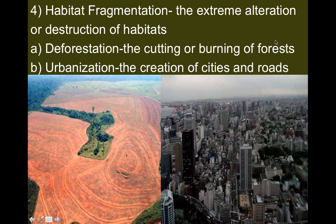Then we get to habitat fragmentation, which deals with deforestation. This is the extreme alteration or destruction of habitats. We've talked about both of these topics before when we did the Endangered Species Project. Many of the animals you researched were being affected by deforestation, and some were also being affected by urbanization. Deforestation is the cutting or burning of forests, and urbanization is the creation of human cities and roads, creating urban settings.